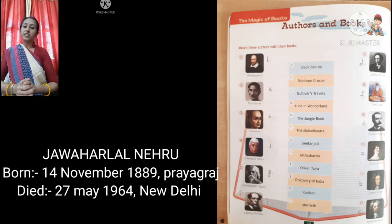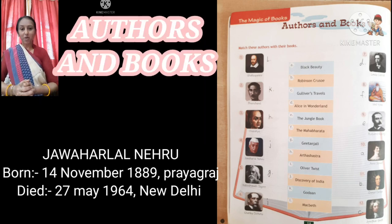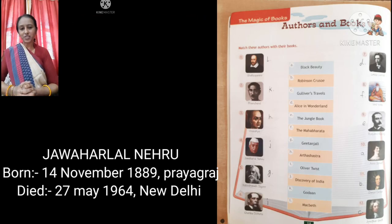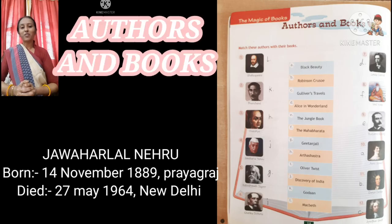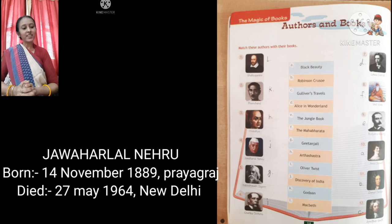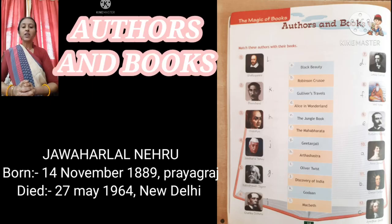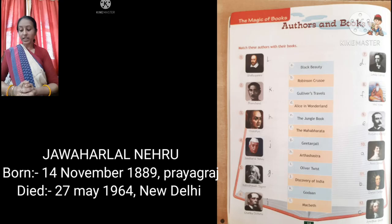The fourth one is Jawaharlal Nehru. All of us know about him — he is a freedom fighter and our first Prime Minister. He was born on 14th of November, which is our Children's Day, in 1889 in Prayagraj, and died on 27th of May 1964 in New Delhi. The name of his book is Discovery of India.